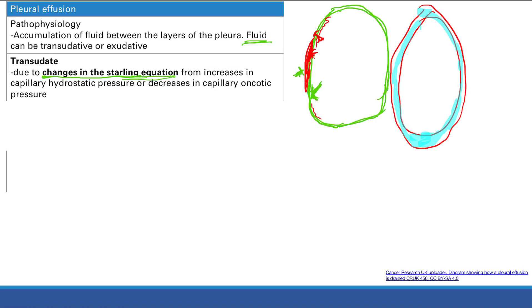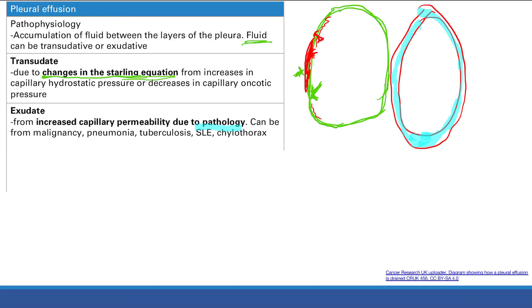Next is the exudative causes. This is pleural effusion resulting from increased capillary permeability. And there is some pathology that's going to cause this increased capillary permeability. Let's change your pen.